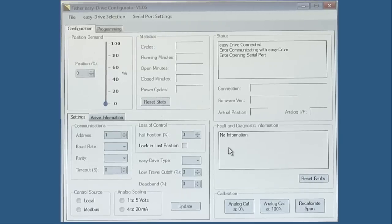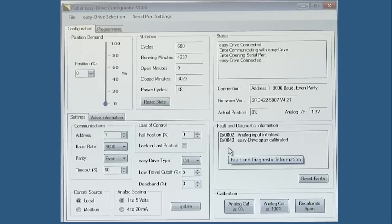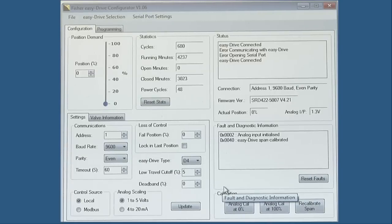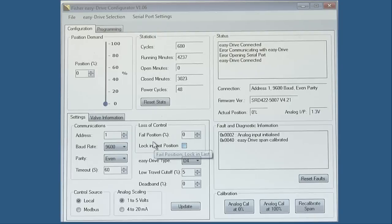Now that you are connected to the EZ-Drive, you should see the application has been populated. Again, this configuration software is a graphical user interface that intuitively publishes the Modbus registers. You can change variables such as fail position, low travel cutoff, and the percent dead band you would like to give the actuator.